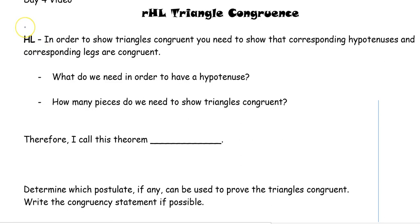Often, it's referred to as the HL method. In order to show triangles congruent, you need to show corresponding hypotenuses. That's where your H is coming to play. And the corresponding legs are congruent. That's where the L is going to come into play. That's why it's the HL method.